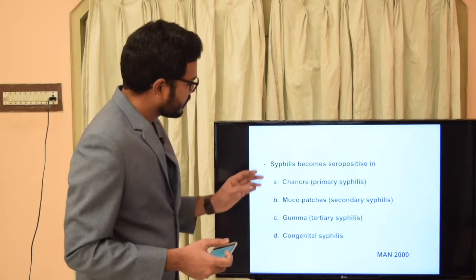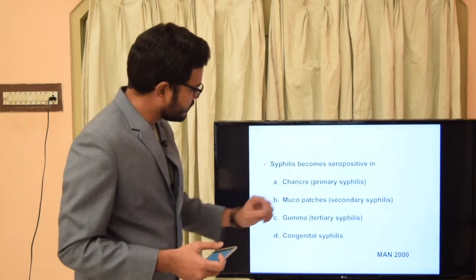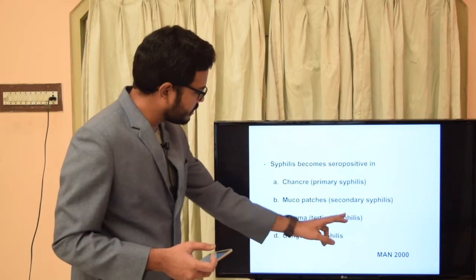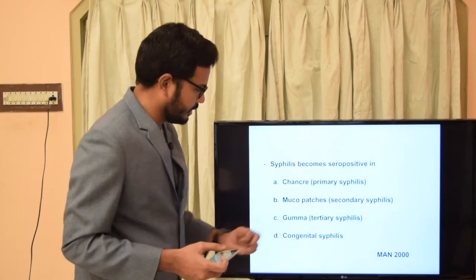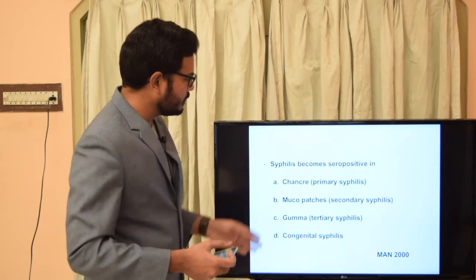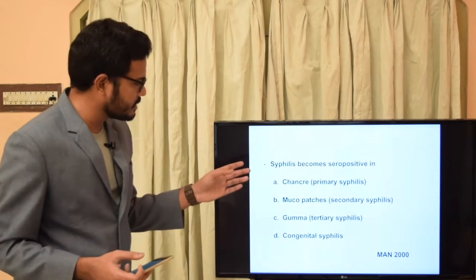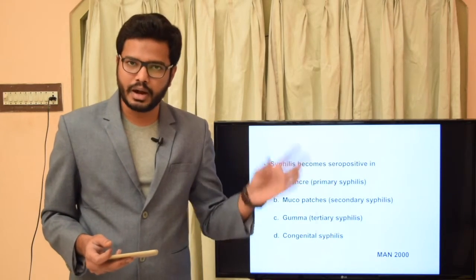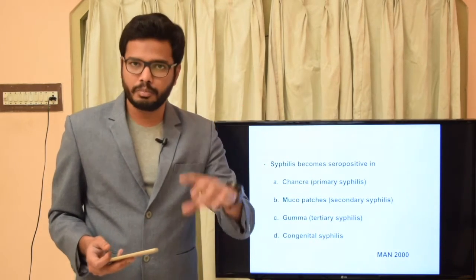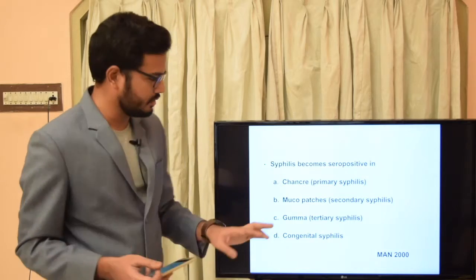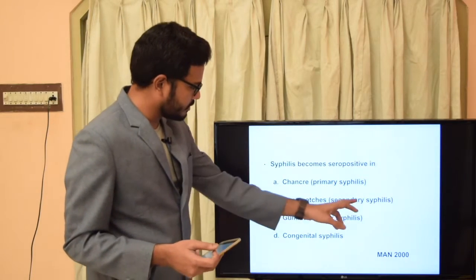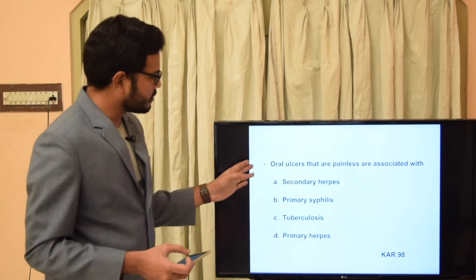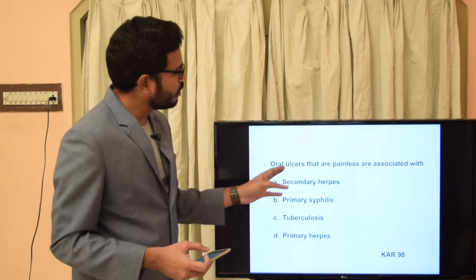Coming to the next question: syphilis becomes sero-positive in — chancre (primary syphilis), mucous patches (secondary syphilis), gumma (tertiary syphilis), or congenital syphilis? As discussed in theory, the patient remains sero-negative in primary syphilis but becomes sero-positive in secondary syphilis. So the answer is obvious: mucous patches — secondary syphilis.